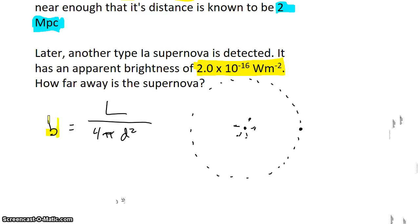Okay, so we know the apparent brightness, and at least in the case of the first supernova, we know the distance to it. We want to find the distance to it in the case of the second supernova.